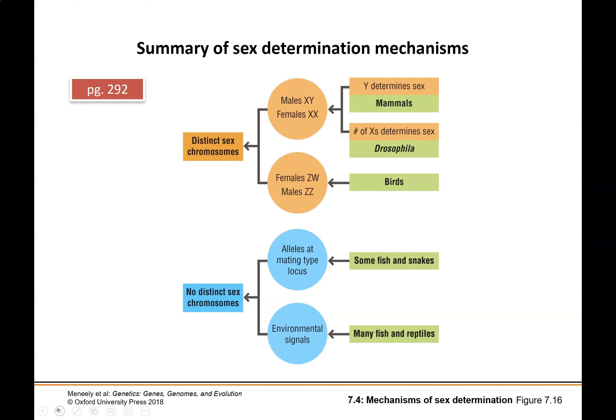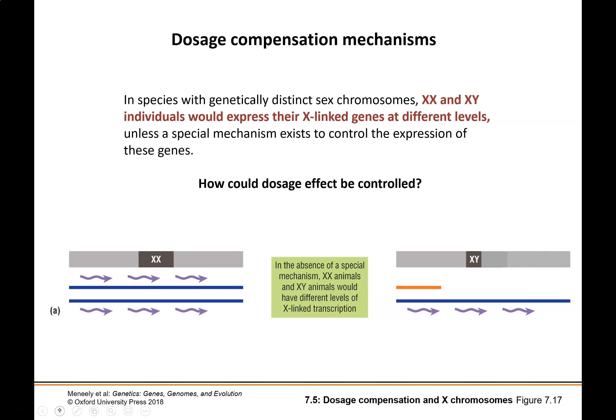This is just a quick summary — not going to go through it in detail — just to help you keep track of the different sex determination systems and what organisms go with each. You can find this on page 292. When we look at sex chromosomes and situations where individuals of one sex have a different number of chromosomes than the other, we encounter a problem called dosage compensation.